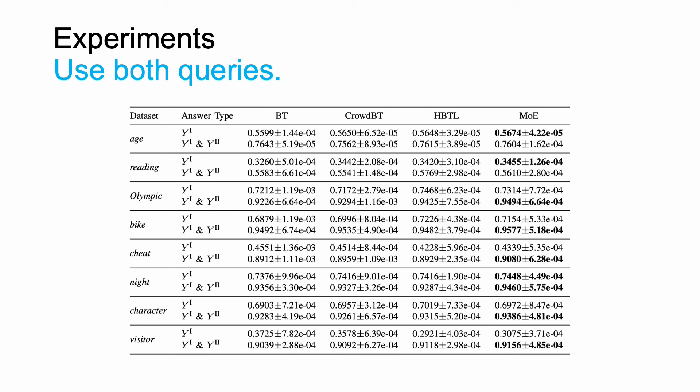Then let's see the results for using both types of queries. For each dataset, the Y1 rows are results for using the canonical query only, and the Y2 rows are results for using both queries. The total number of labels is the same for these two cases. On the one hand, answers to the new query benefit all four algorithms on all eight datasets. On the visitor dataset, the Kendall's tau of all methods becomes two times better when using both types of queries. These results clearly support our claim for using information about rank difference for PRA. On the other hand, using both types of queries, the proposed MOE method achieves the best performance on six of the eight datasets, which justifies our claim for modeling object-dependent errors.